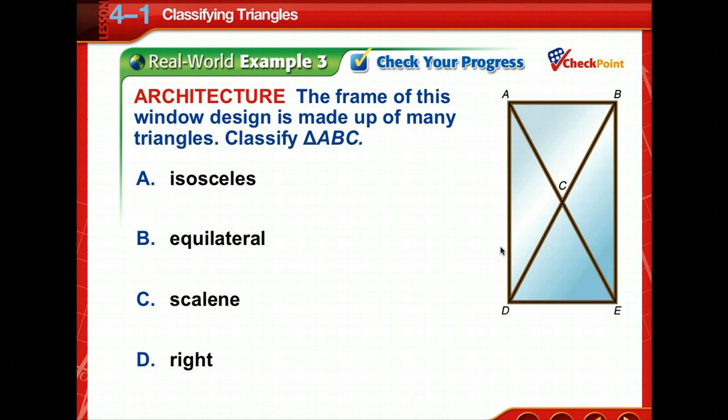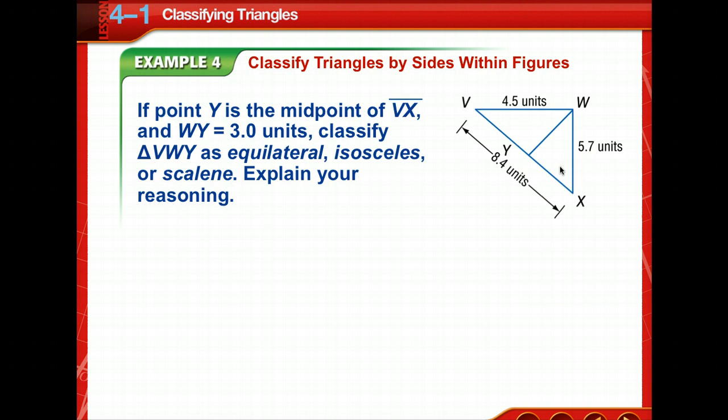How about check your progress on this window frame? So, you know that a rectangular window frame is going to have 90s, so maybe that will help you determine the sides. So, pause the video for a moment and come back and check your answer. So, ABC is classified as an isosceles. AC and BC are the same length.